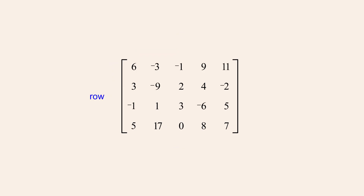The rows of a matrix are numbered from top to bottom starting with row 1, and the columns are numbered from left to right starting with column 1. The position of an entry in a matrix can be specified by its row and column numbers. These are called the indices of the entry and are written as subscripts following a variable which represents the entries in the matrix.